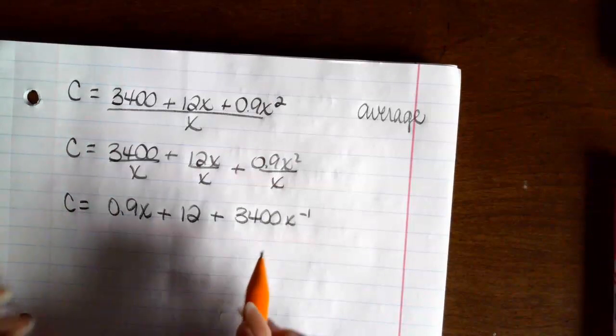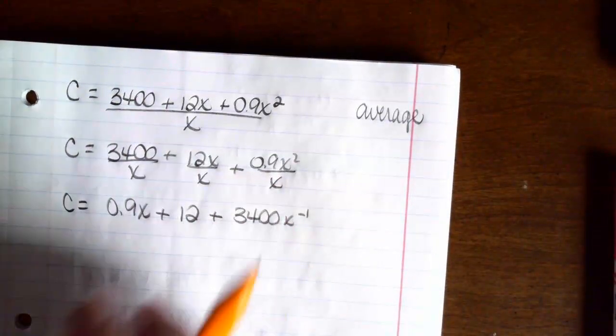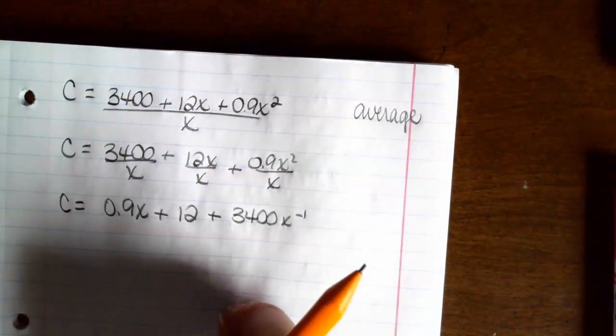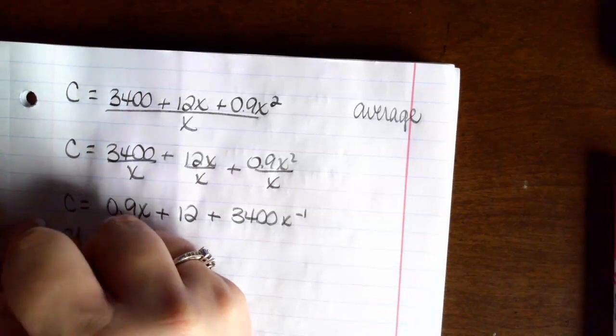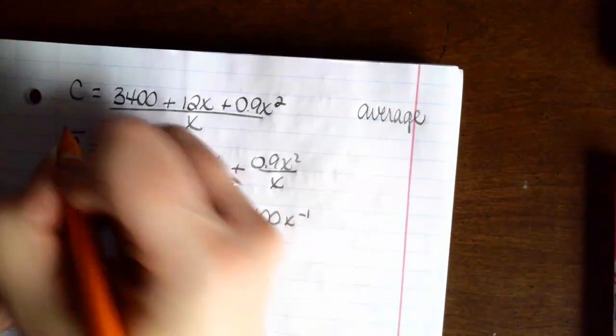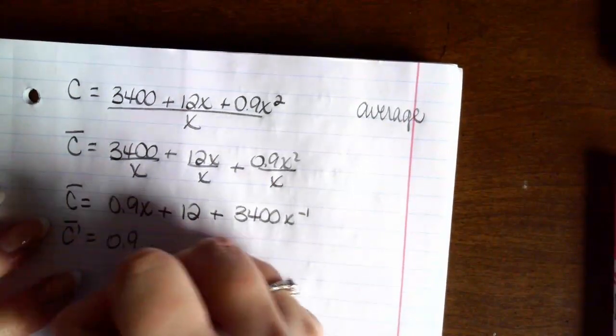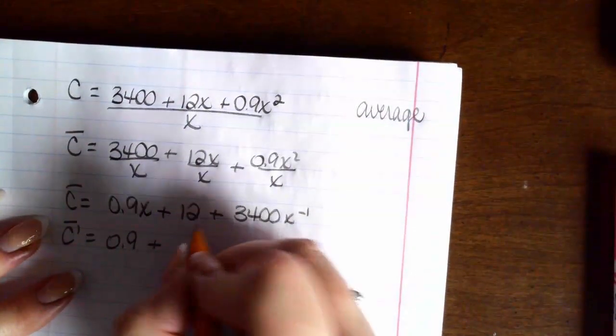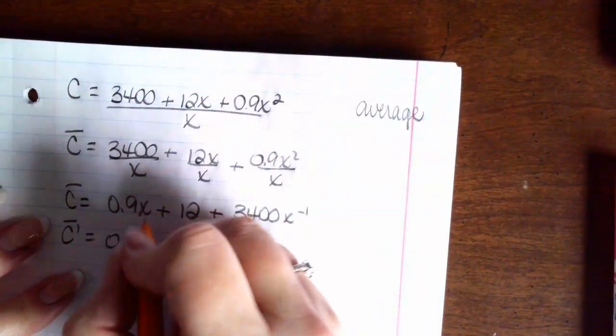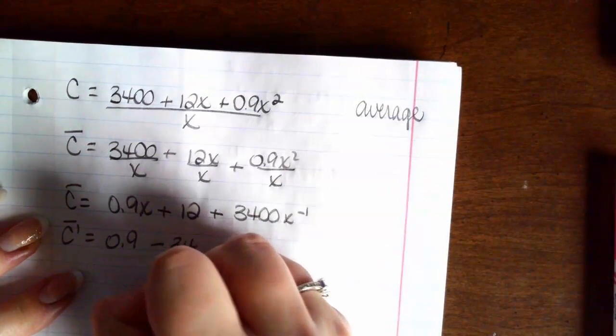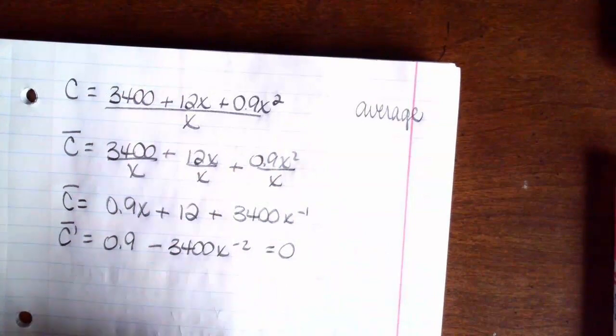So I want to set this equal to 0 and solve after I take a derivative. So we haven't taken a derivative yet. So my derivative for my average cost function is going to be 0.9 plus 0 and then I've got a negative 3,400x to the negative 2 and that's going to equal 0.